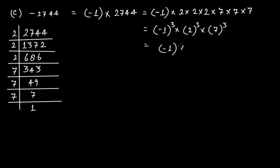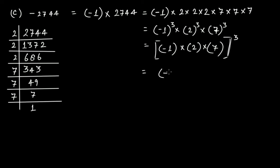This can be written as minus 1 whole cubed, multiplied by 2 cubed, multiplied by 7 cubed. So minus 2744 can be written as minus 14 raised to the power of 3, meaning minus 14 multiplied by minus 14 multiplied by minus 14. Therefore, if you take the cube root of minus 2744, you get minus 14.